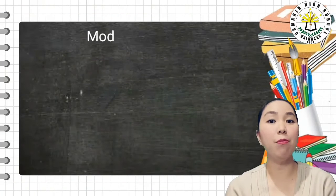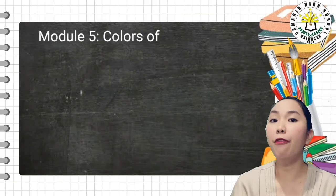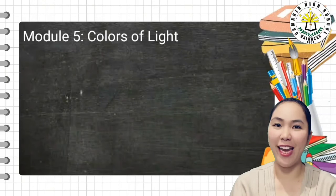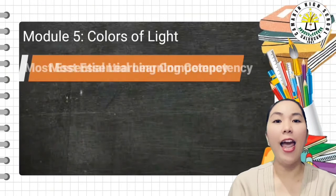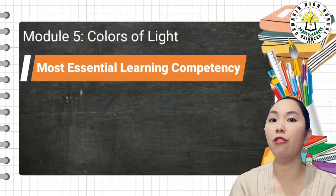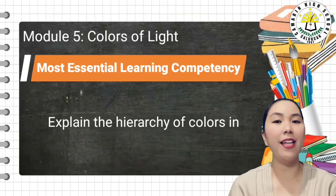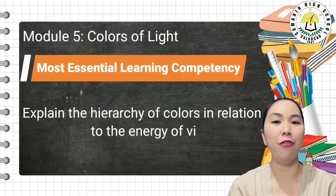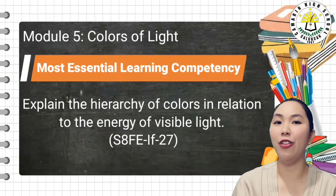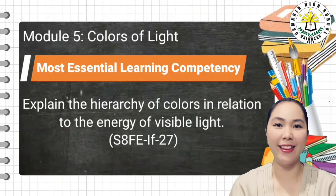Next is Module 5. Module 5 focuses on the colors of light. The most essential learning competency in Module 5 is to explain the hierarchy of colors in relation to the energy of visible light.